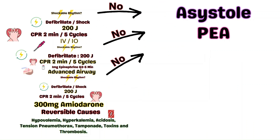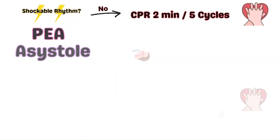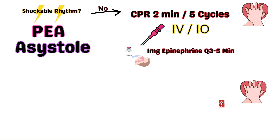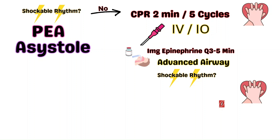Now, if at any point when performing a rhythm check the rhythm is not shockable, we go down a different pathway. Remember, the two non-shockable rhythms are asystole and pulseless electrical activity. If the rhythm is not shockable, you're going to resume CPR for two minutes, place an IV and IO if not yet done, and administer one milligram of epinephrine every three to five minutes. Place an ET tube if it's not already in place.